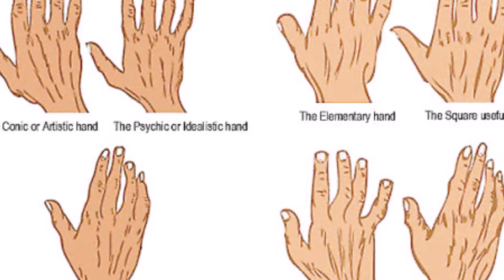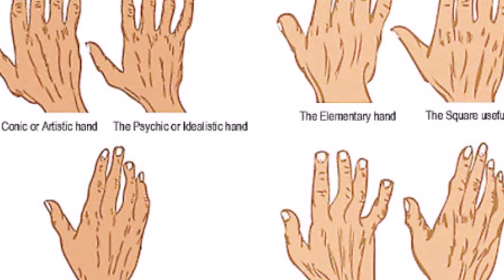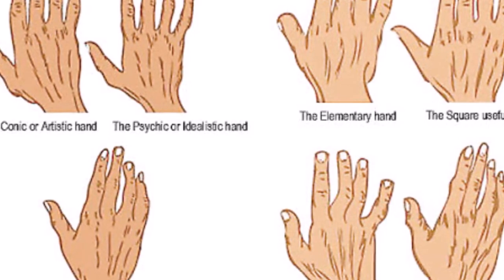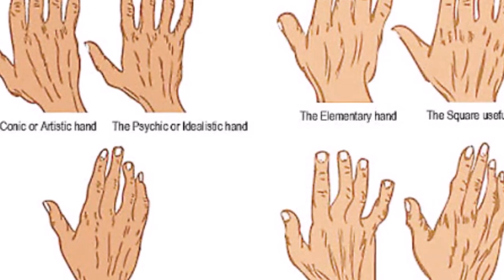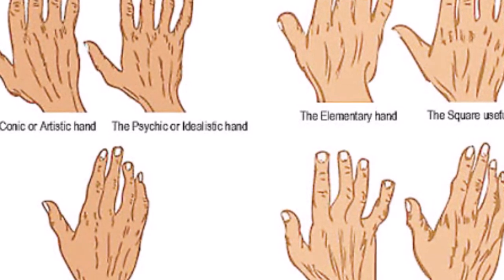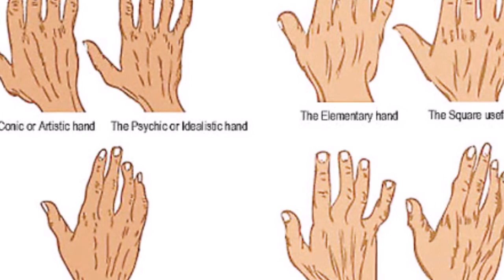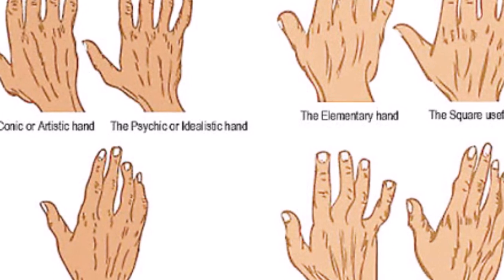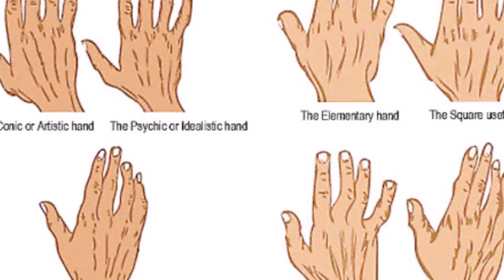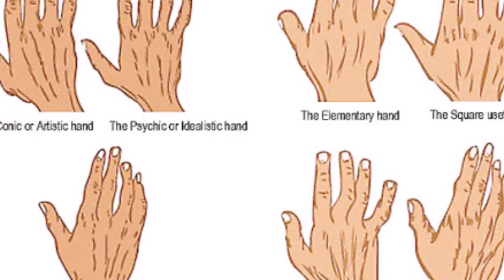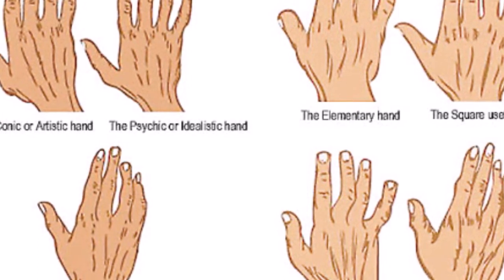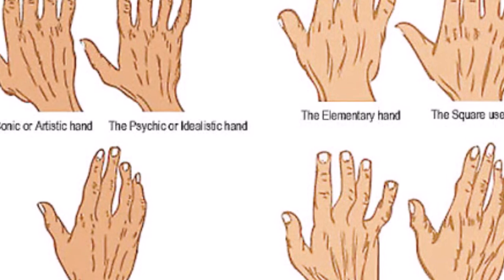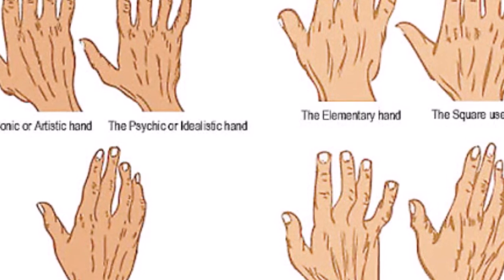The fifth one is the conic or the artistic type. The sixth one is the psychic or the idealistic hand. The seventh one is the mixed hand.